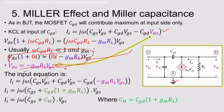Substituting Vds = −gm·Rl·Vgs into the first input KCL equation: Ii = jω·[Cgs·Vgs + Cgd·Vgs − Cgd·(−gm·Rl·Vgs)]. This simplifies to: Ii = jω·[Cgs + Cgd·(1 + gm·Rl)]·Vgs. The term Cgd·(1 + gm·Rl) is called Miller Capacitance, denoted Cm.